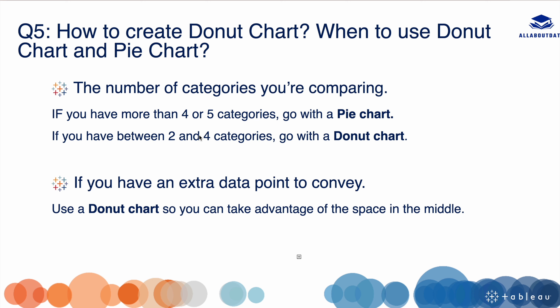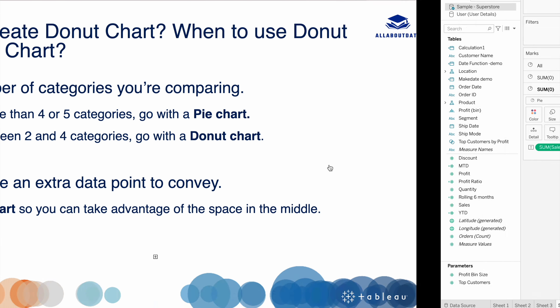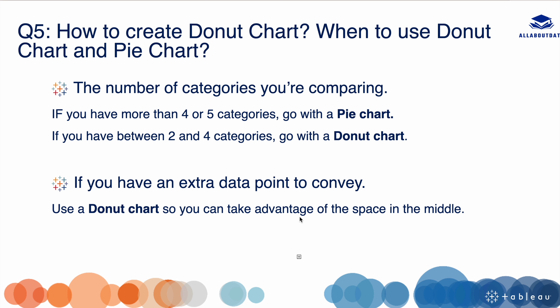When should you use a donut chart versus a pie chart? If you have more than four or five categories, go with a pie chart. If you have two to four categories, go with a donut chart. If you have an extra data point to convey — such as showing the total number of sales in the center — then a donut chart is the better choice.